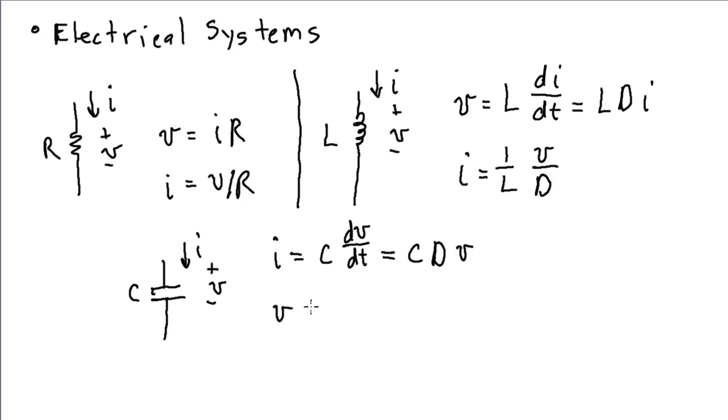And then similarly, for the voltage across the capacitor, it's equal to 1 over C times I over D. And then, you know, I'll point out for these current voltage relationships, they all assume this relationship between the current and voltage.